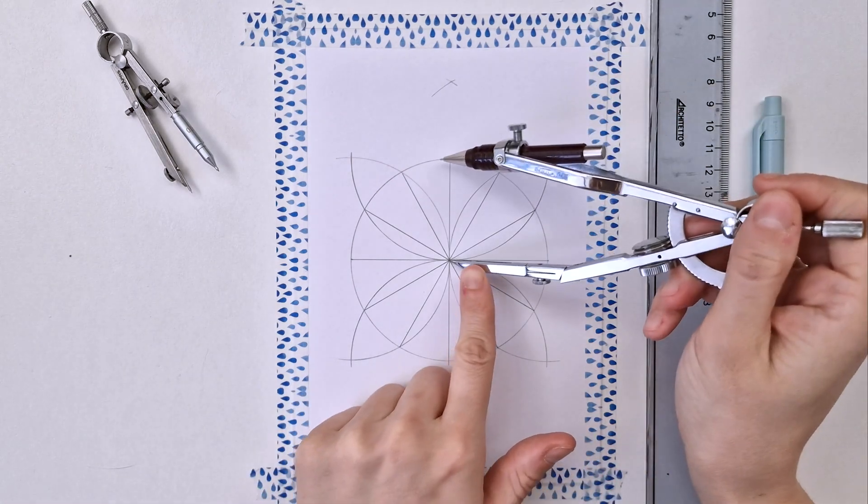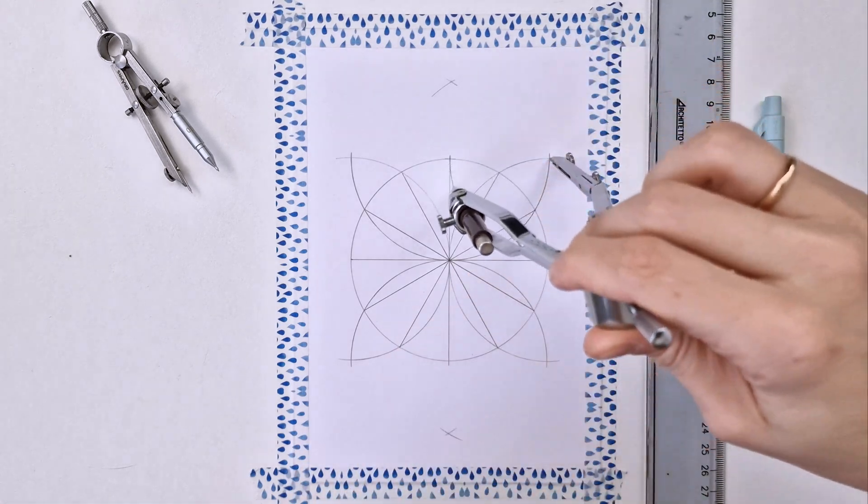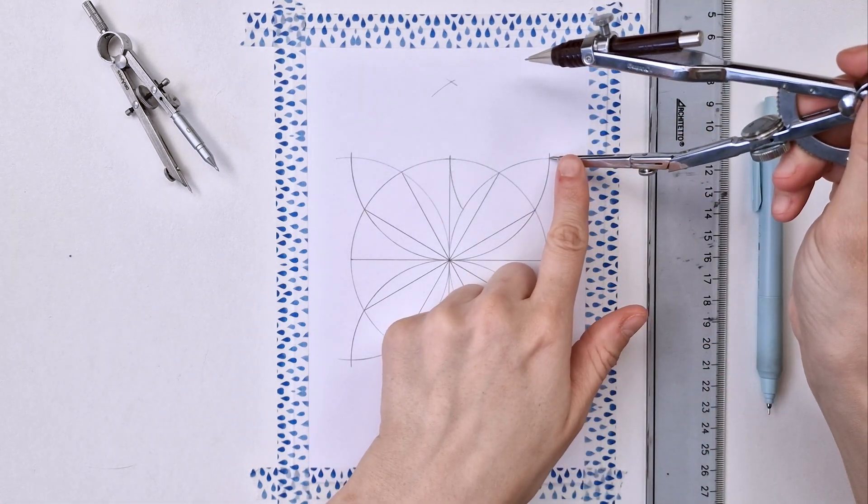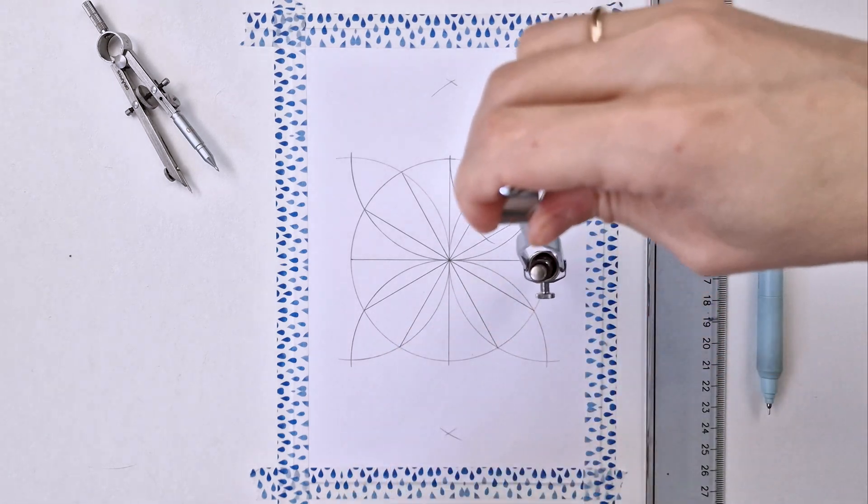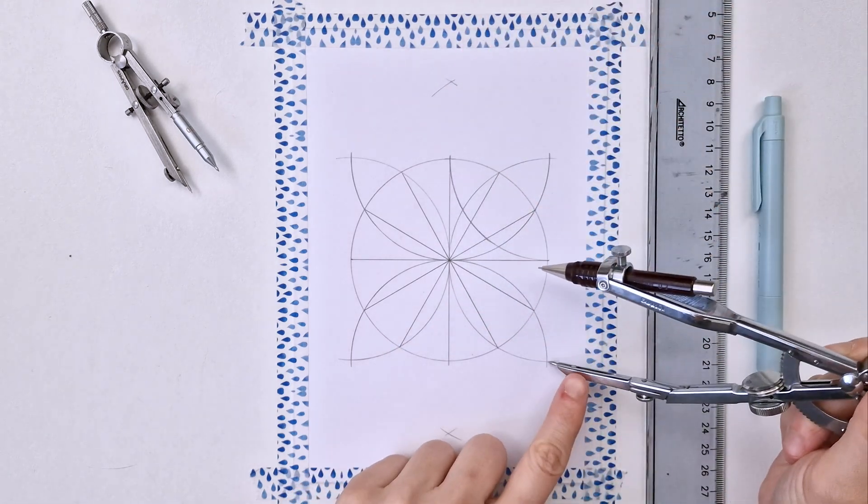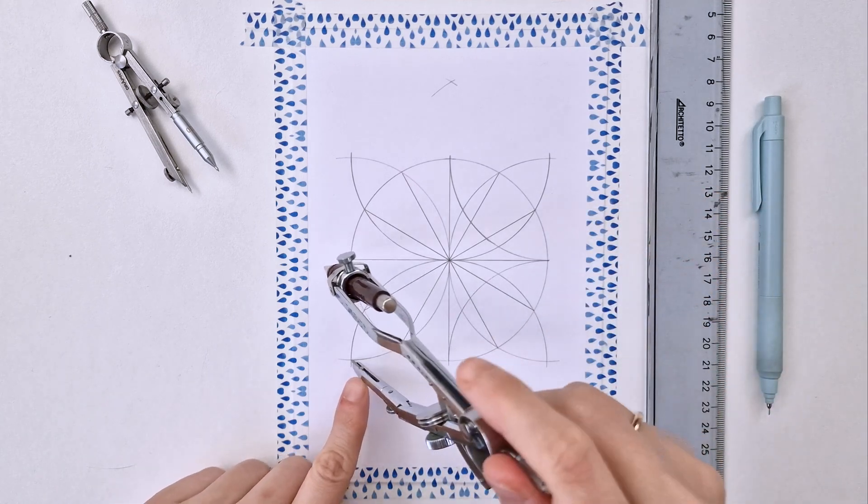Using the initial radius, pointing the compass on the intersections between the semicircles, I'm drawing an arc inside the circle. Four arcs, actually.